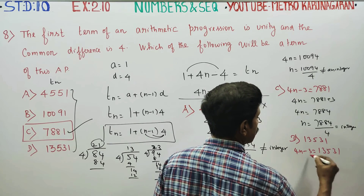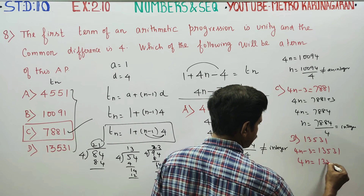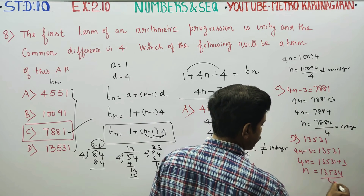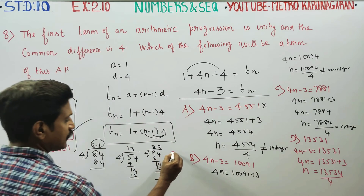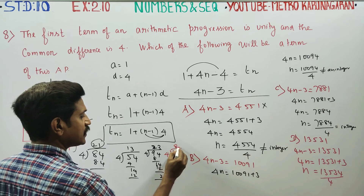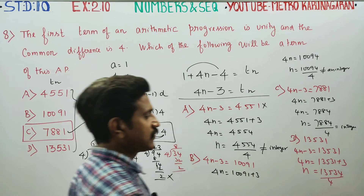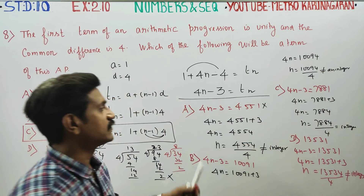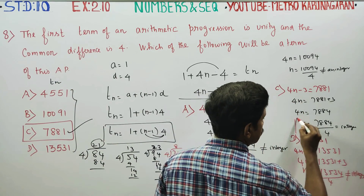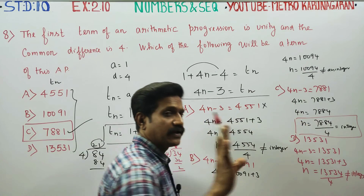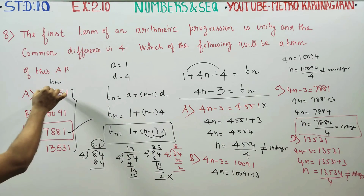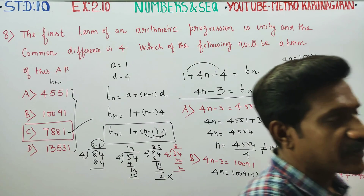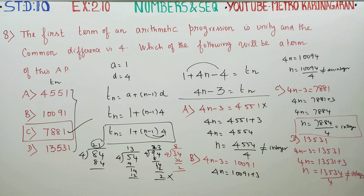The integer value gives us 7881 as a valid term in the arithmetic progression. Therefore, the correct answer is option C: 7881. This is a term of the AP with first term 1 and common difference 4. Thank you.